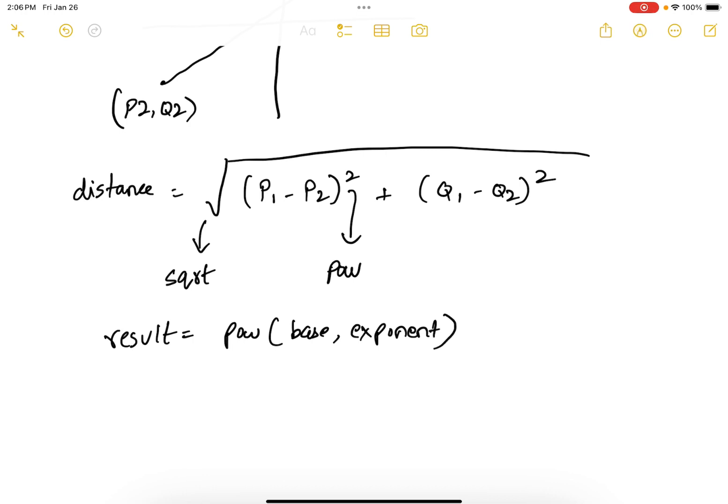And the syntax for your square root can be something like result equals to sqrt. And it will take only one parameter, which in this case is num.